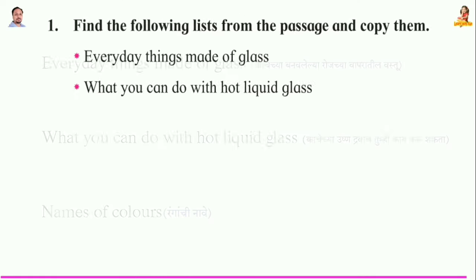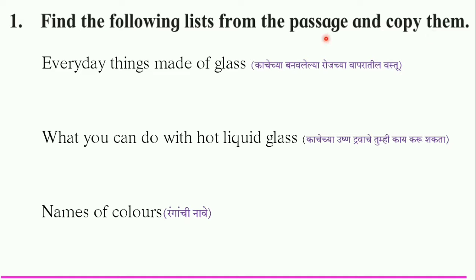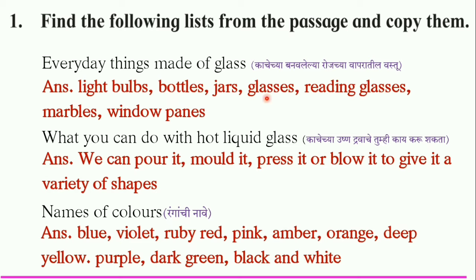Question number one: find the following lists from the passage and copy them. Everyday things made of glass. What you can do with hot liquid glass — we can pour it, we can mold it to give it a variety of shapes.